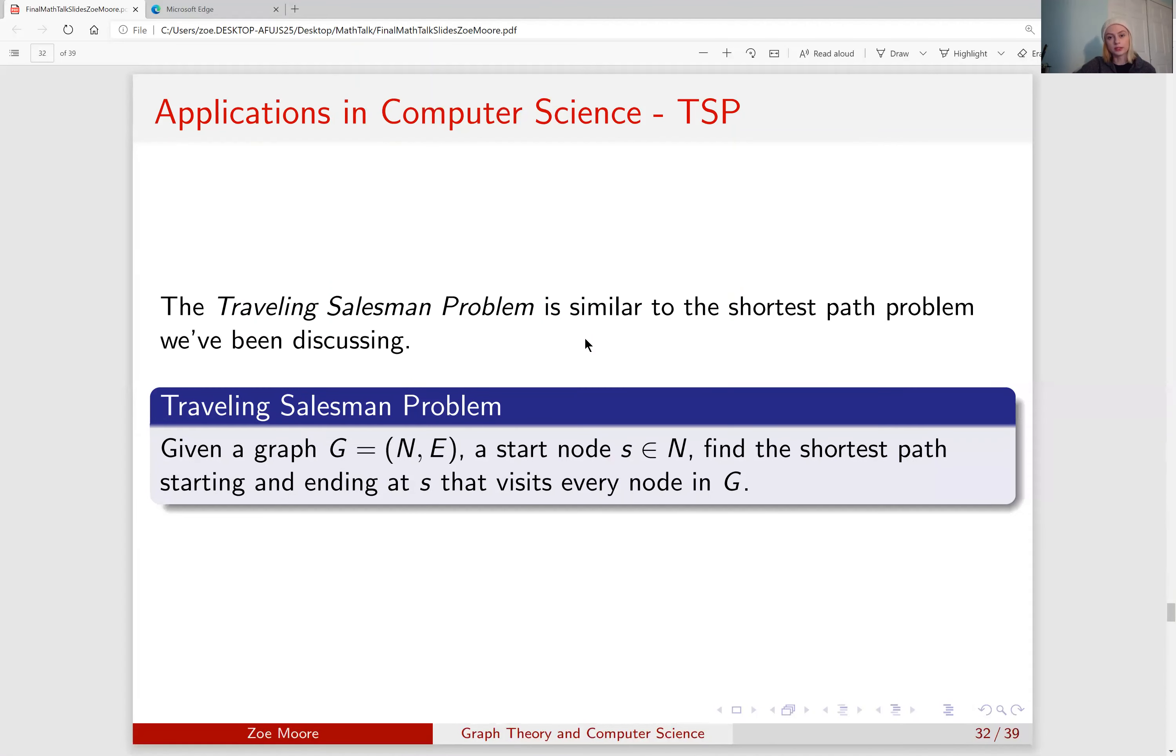Now, how does this relate to computer science? In computer science, there is something called the traveling salesman problem, which is similar to the shortest path problem that we've been discussing. The traveling salesman problem says, given a graph G and the start node S in our set of nodes, find the shortest path starting and ending at S that visits every node in G. It's called the traveling salesman problem because it is saying, given a salesman starting in the city that he lives in, visit every city to sell the product and then return home in the quickest amount of time or in the shortest distance.